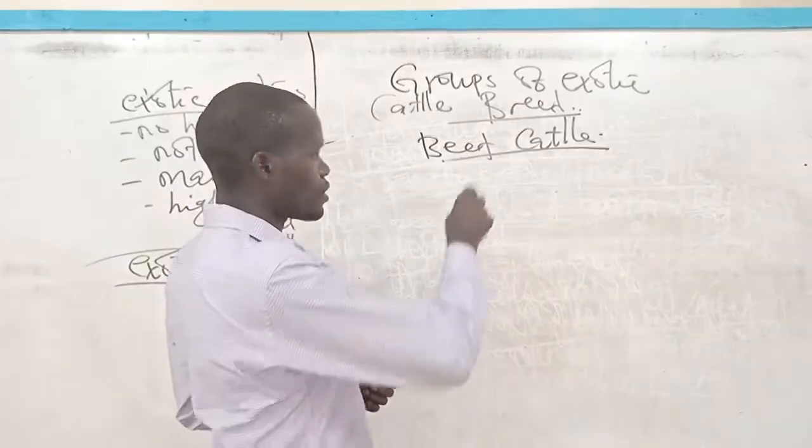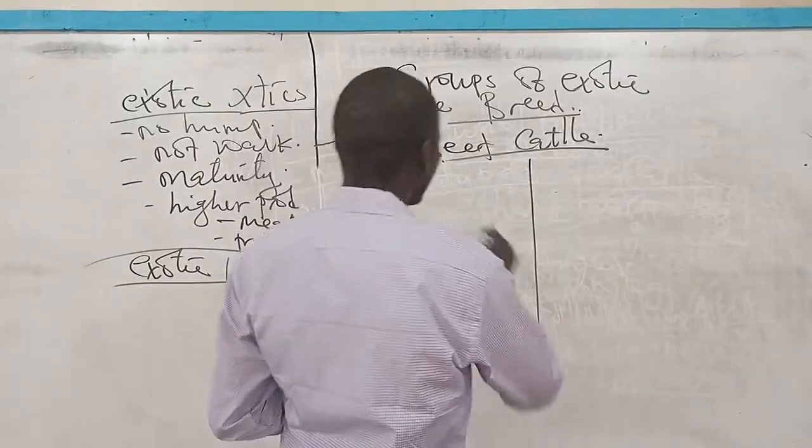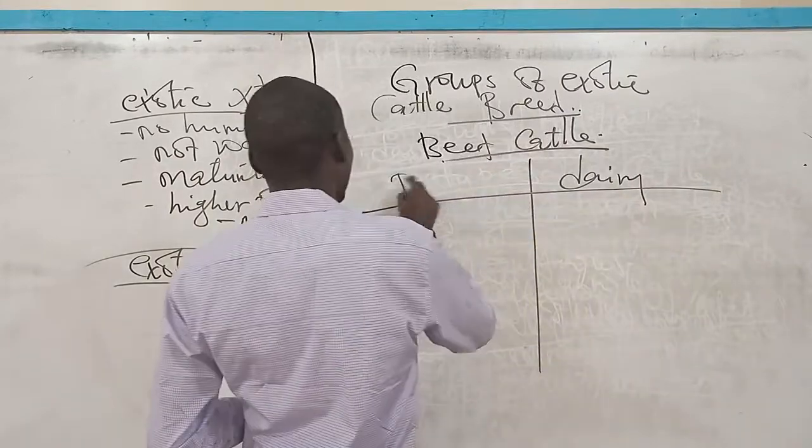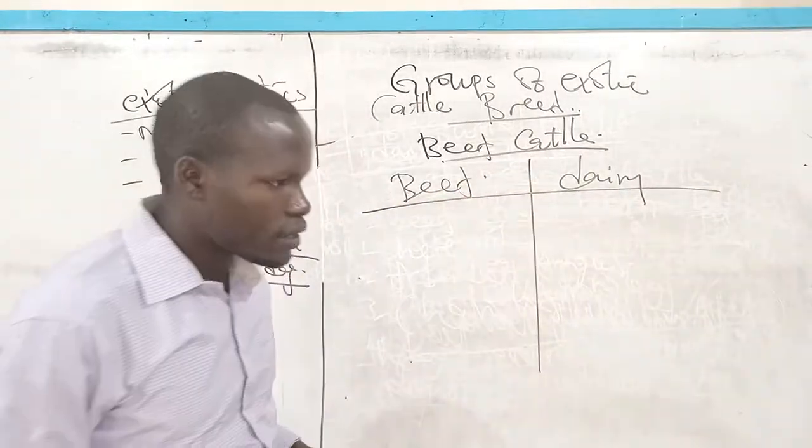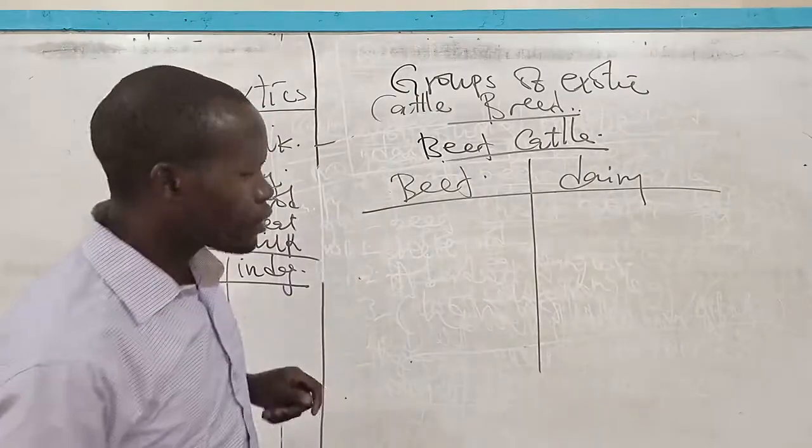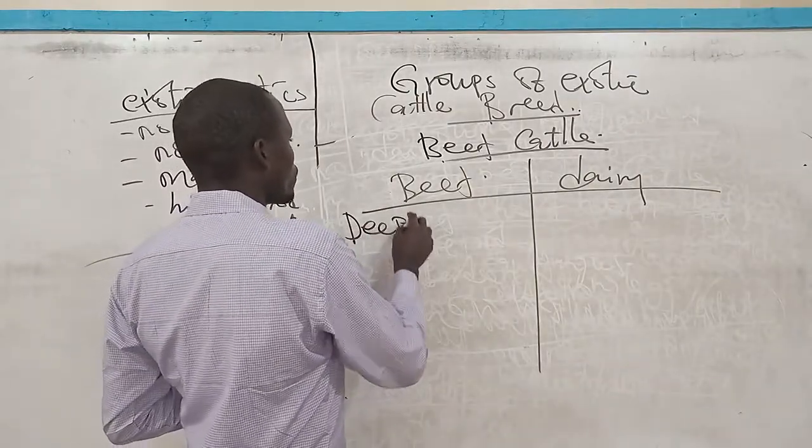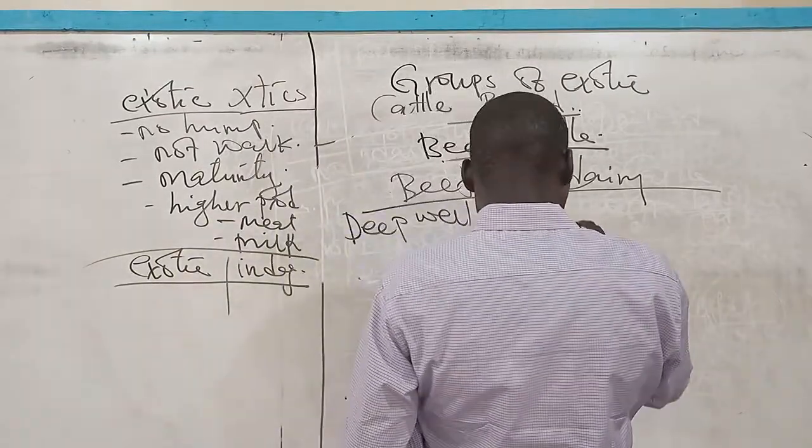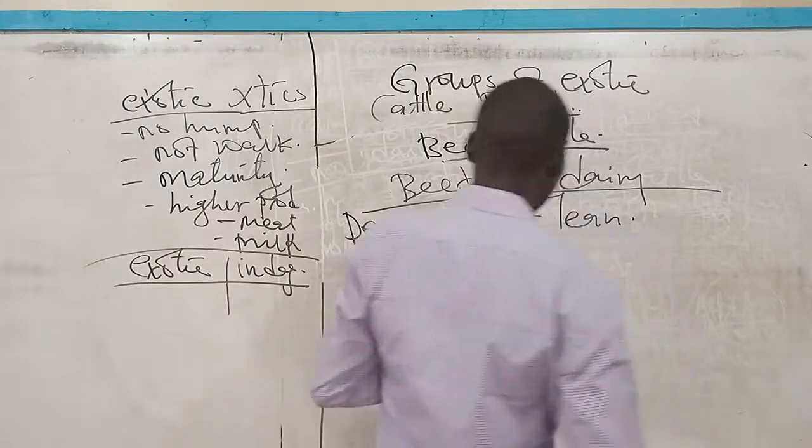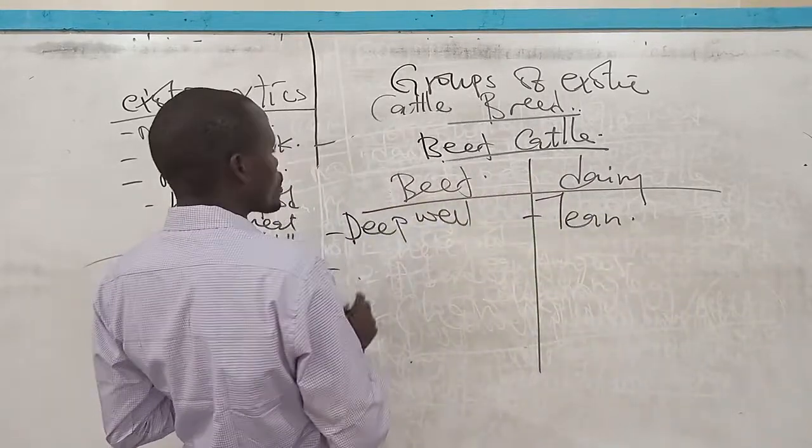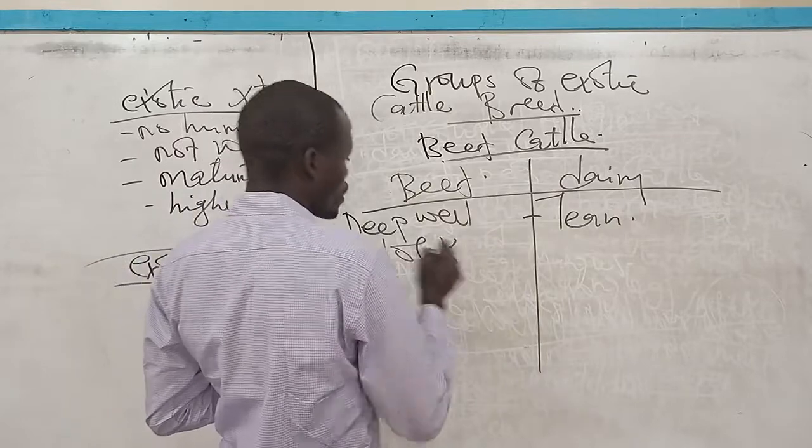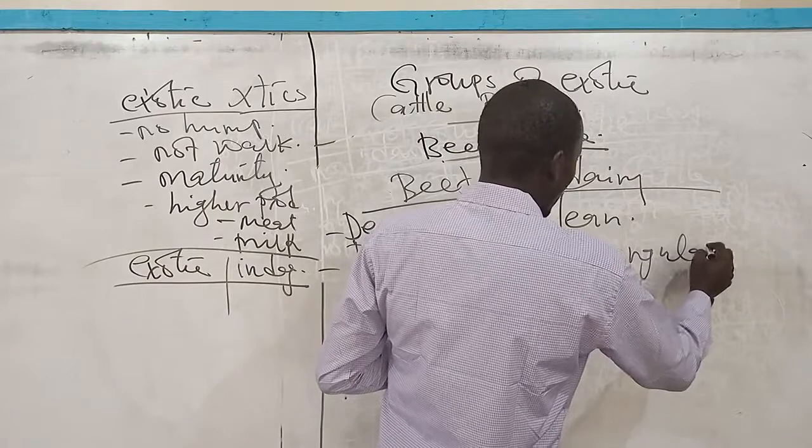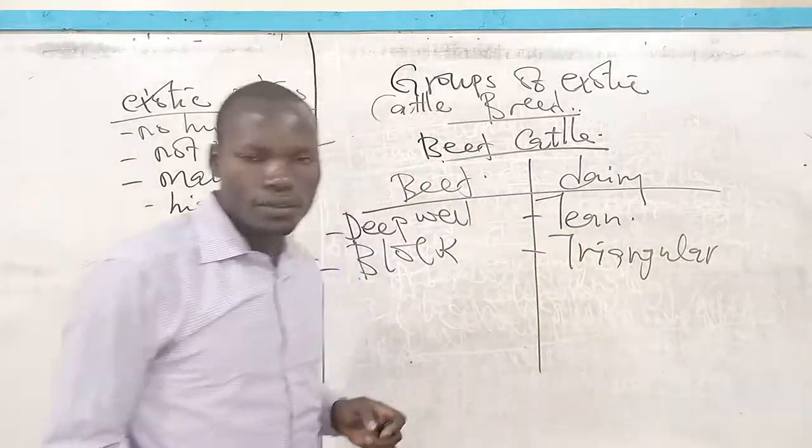Briefly, we can summarize the differences between the beef cattle and the dairy cattle. The difference, for instance, we can say that the beef cattle have a deep or fleshed body, whereas these ones, their body is lean. Next, in terms of the shape, these ones, they are blocky in shape, whereas the dairy cattle are triangular in shape.